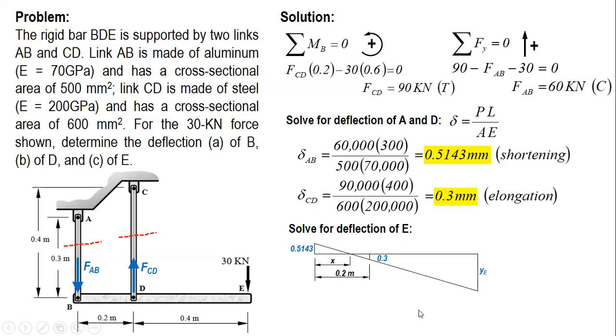And then we do ratio and proportion. 0.5143 over X equals 0.3 over this distance 0.2 minus X. And using your calculator, X is equal to 0.1263 meters.